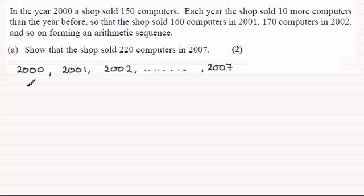We know that in the year 2000, 150 computers were sold. So I'll just put 150 there. And then it went up by 10 each year. So we had here 160 in 2001, 2002, 170 and so on.